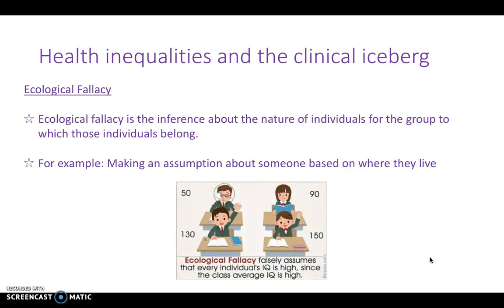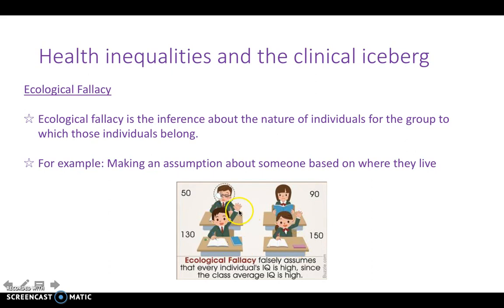A nice example is falsely assuming that everyone in a class has a very high IQ just because the overall class average is high, when in actual fact there might be some people with very high IQs and some with very low.